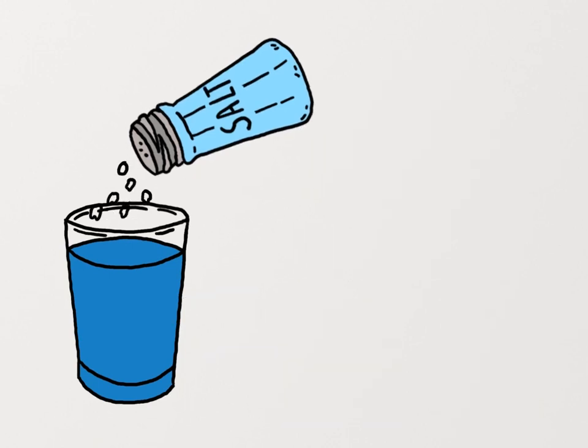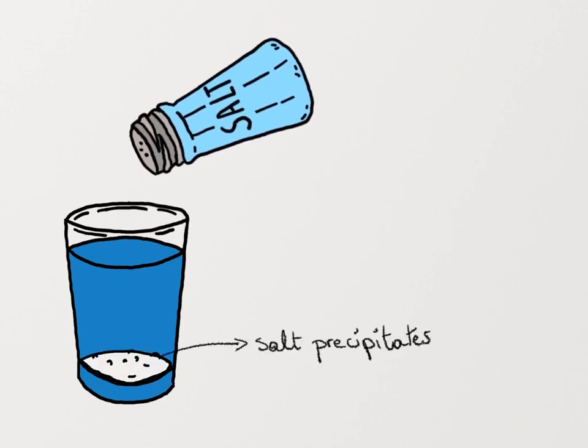Now, if you add enough sodium chloride, eventually it stops dissolving. And that is also the result of the fact that there's only so much space to put each individual ion in the water molecules. But if the concentration of sodium and chloride ions get high enough, then it turns out that forming ionic bonds is more favorable than diffusing the charge.